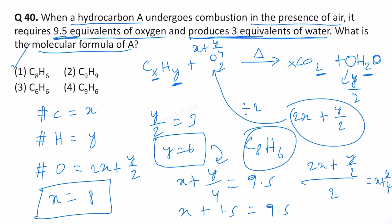Let's cross-check it. If we put C8H6 with 9.5 equivalents of O2, what we will get? We will get 8 times CO2 plus 3 times water. Do we have 19 oxygen atoms? Yes, we do. We have 16 oxygen atoms here and we have 3 oxygen atoms here. Total 19 oxygen atoms we have, therefore our answer is correct.